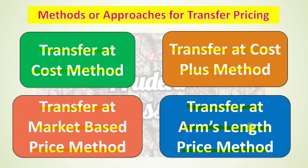This fourth method is very, very important. So the four methods are very important and you should know all four. To recap: the four methods or approaches for applying transfer pricing in any multinational organization are — transfer at cost method, transfer at cost plus method, transfer at market-based price method, and transfer at arm's length price method.